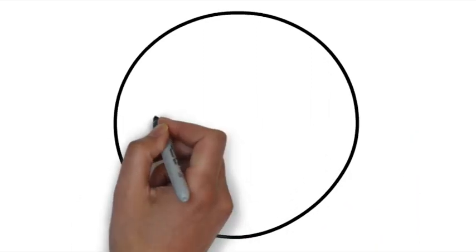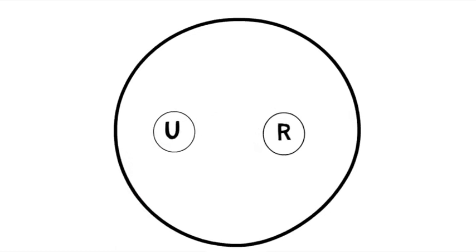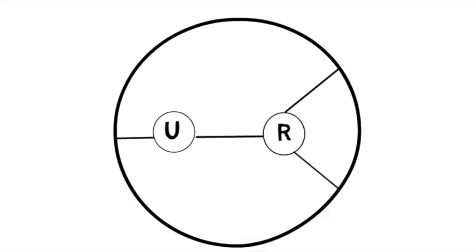First, draw a big circle and within that circle draw two smaller circles. Label these the radius and the ulna. Then split this into three sections: anterior, posterior, and the mobile wad.